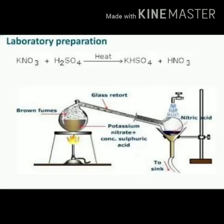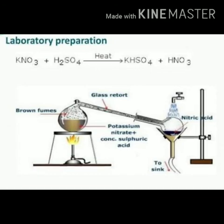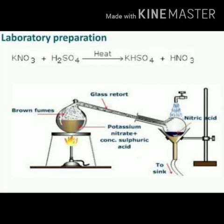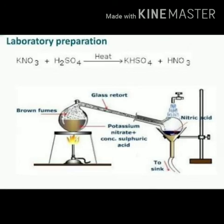Pure nitric acid is a colorless liquid, whereas nitric acid prepared in the laboratory is slightly yellowish-brown in color. This is because of the reddish-brown NO2 gas produced due to the auto-decomposition of HNO3: 4HNO3 → 4NO2 + O2 + 2H2O. As a result, a slightly yellowish-brown color appears in the lab-prepared acid.